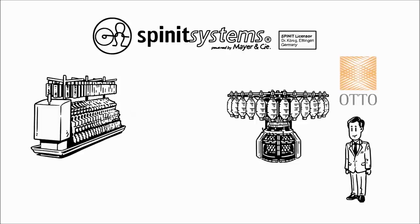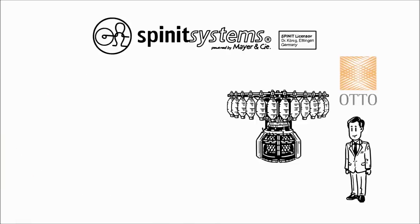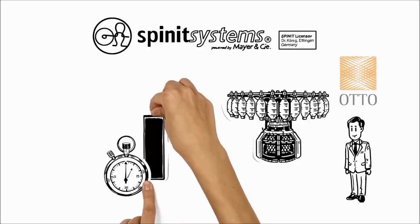Mr. Merkel of Gebrüder Otto doesn't need a ring spinning frame or a winding machine, freeing up considerably more space in his plant. The previous process has now got about a third shorter.